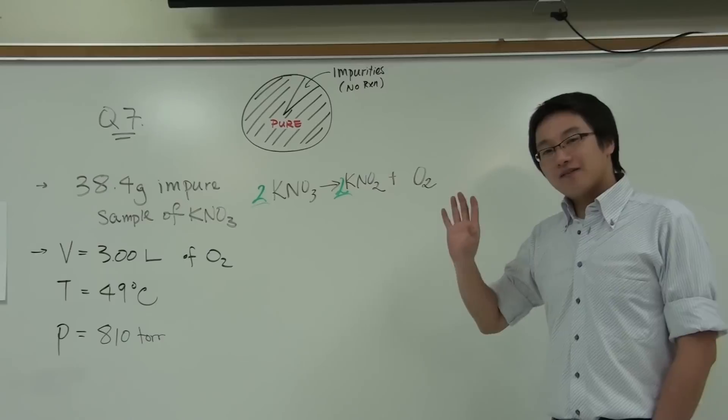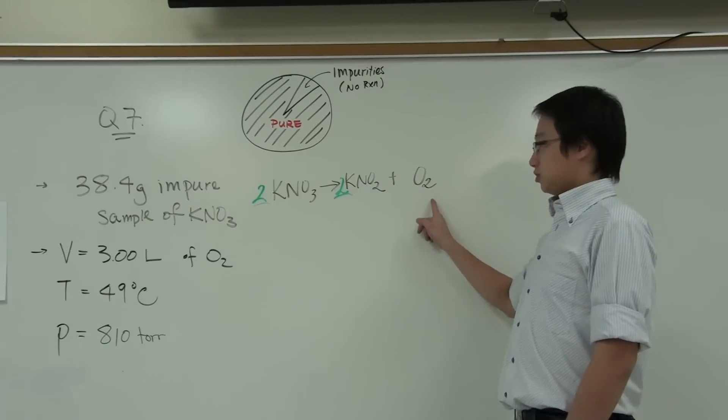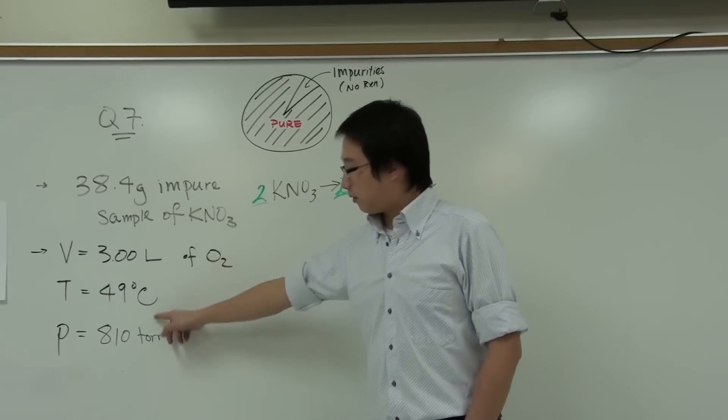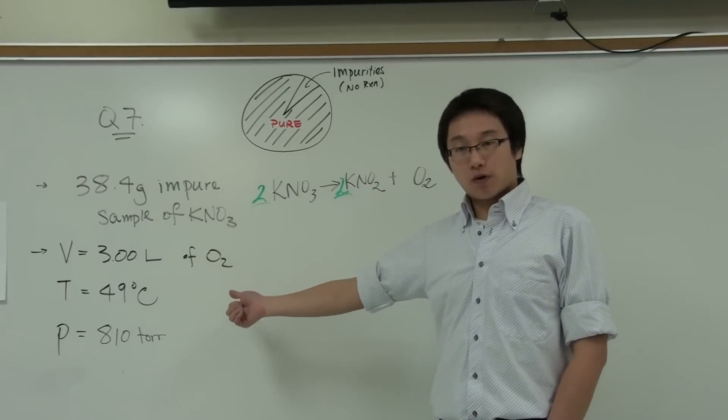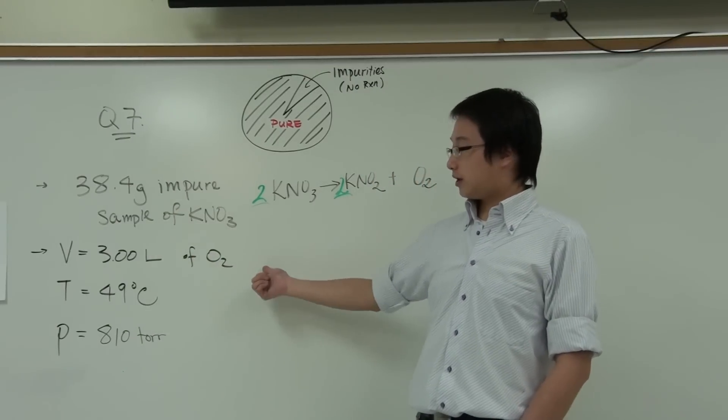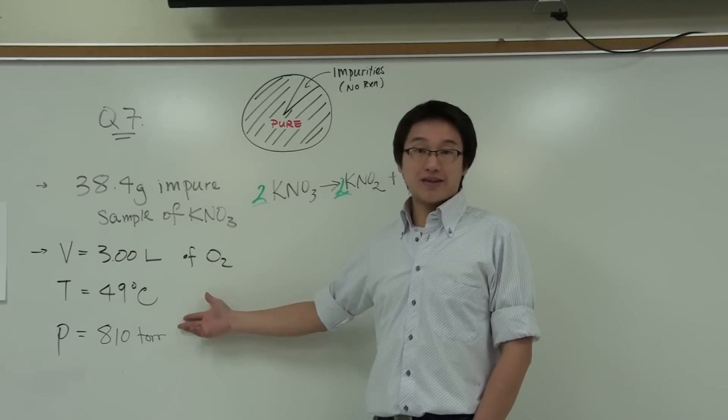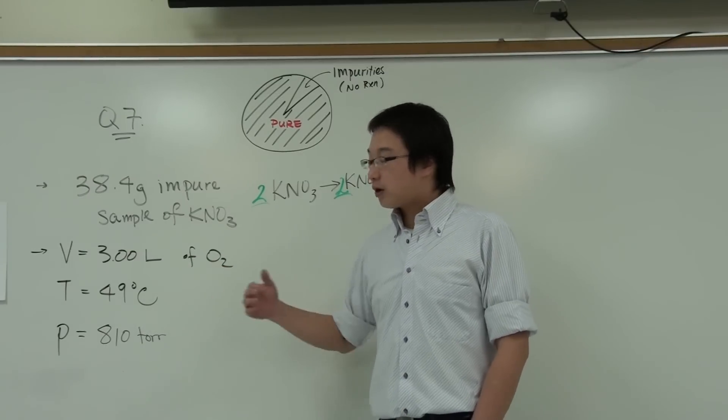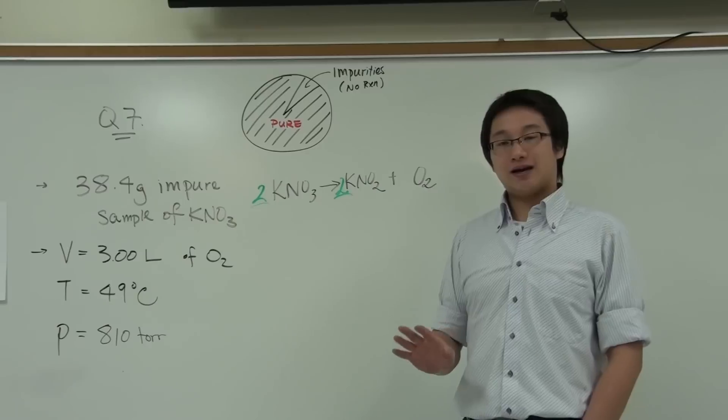Now, we are given information about the oxygen gas. As you can see here, I list it right here. The problem gives you the volume, which is 3 liters of oxygen gas. The temperature is 49 degrees Celsius, and the pressure is 810 torr.